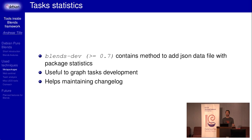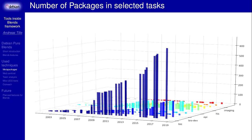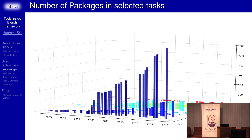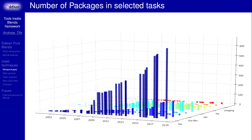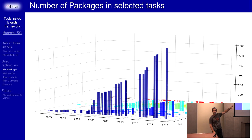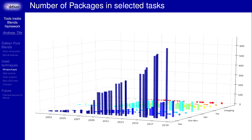It also helps maintaining the changelog — because if we change the task, I'm very lazy to maintain the changelog manually. This tool can generate the changelog with all the changes you have added compared to the previous version of the source package of your blend. For instance, here is a graph I generated with these JSON files. It displays the Debian Med tasks over time from 2002 until 2018. You can see the number of packages in the biology task was rising a lot, while other tasks rose less steeply.